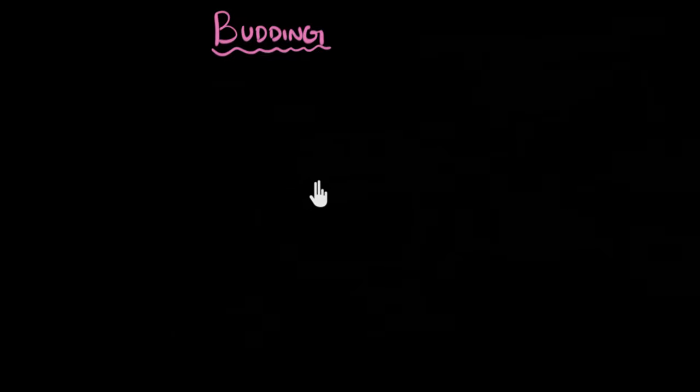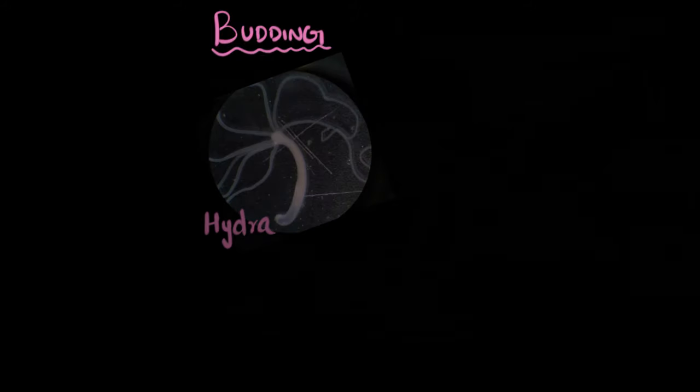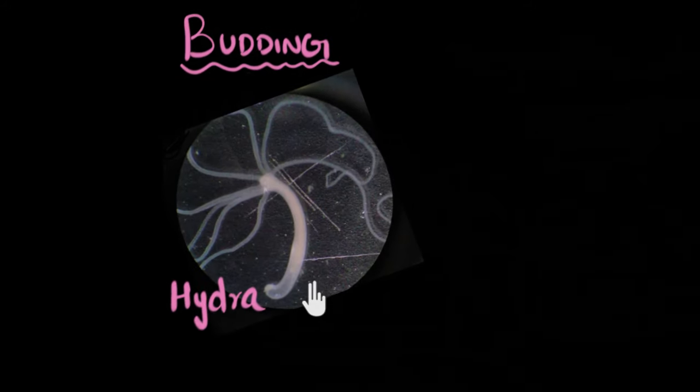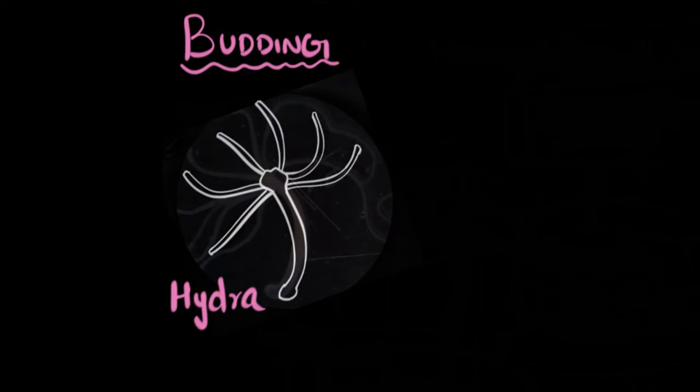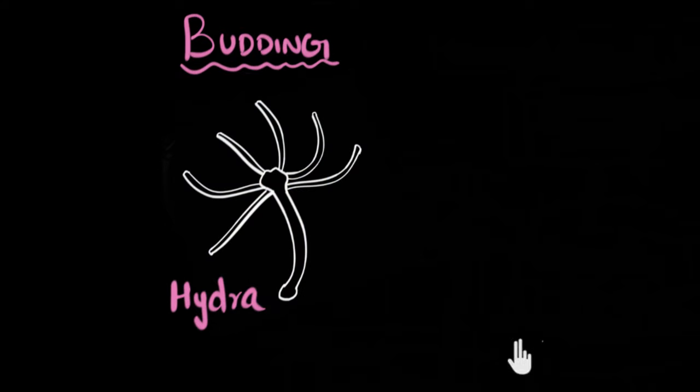So what's budding? Let's take an example to understand this. Take an example of a sea creature called Hydra. This is what it looks like under a microscope, okay? Let me make a drawing of that. Here it is. When this sea creature, Hydra, which is a multicellular organism, once it is mature, that is, it's ready for reproduction, what we will see is a tiny outgrowth from a particular part of its body.